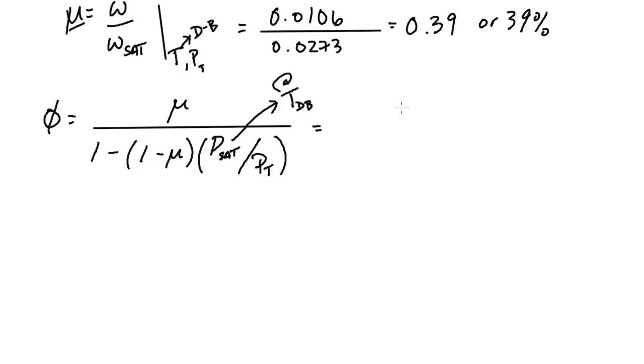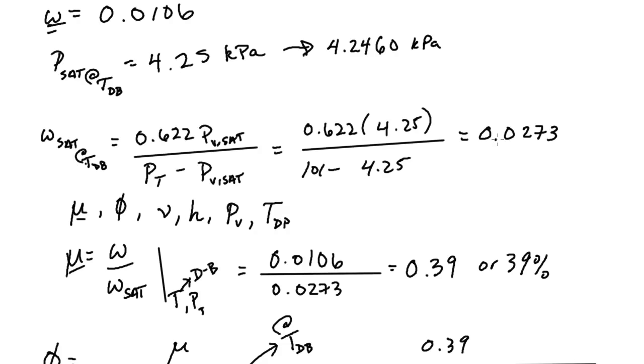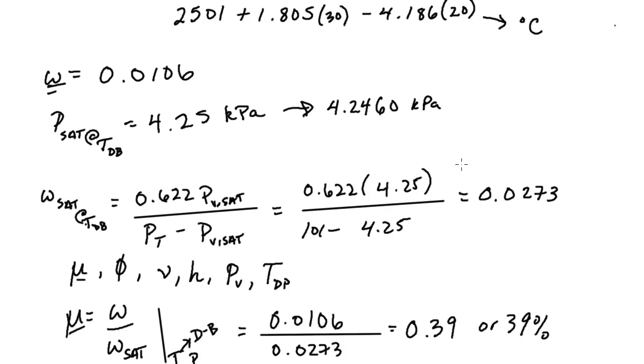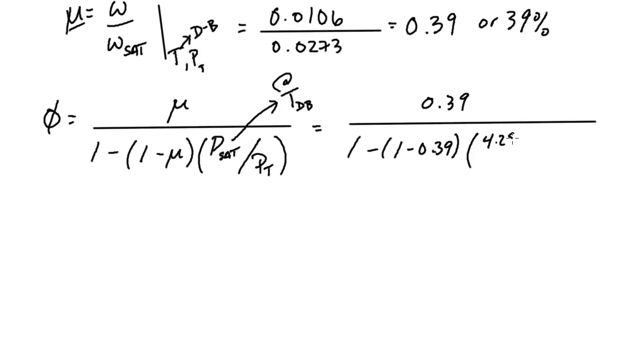So let's fill in values. So here we had 0.39 on the top, divided by 1 minus 1 minus 0.39. And we had solved for that saturation pressure here, 4.25 kilopascal, and we are dividing by 101 kilopascal. And if you do this, you should get a value around 40% or 0.4. So there you have it. We now have calculated out relative humidity.